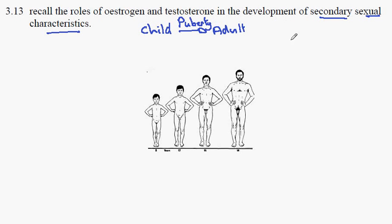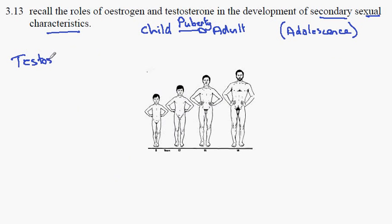This is not to be confused with adolescence, which is the development of the brain. Looking at male changes first, the hormone which produces these changes is testosterone, and the endocrine gland for testosterone is the testes. We're going to discuss the multiple effects on the multiple targets that testosterone has.